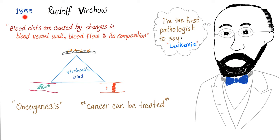And this is my favorite guy — people call him Virchow, but that's wrong. It's Virchow — he's German, respect the language. Just like the car make Volkswagen is pronounced Volkswagen. Virchow was the first to use the word leukemia, the first to propose that cancer can be treated — not cured, but treated. And he discovered the famous triad: blood clots are caused by changes in the blood vessel wall, blood flow, and its composition. Here is Virchow's triad: blood stasis, endothelial damage, and hypercoagulability.